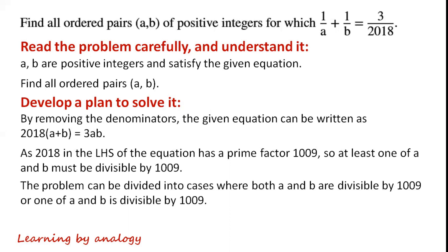The problem can be divided into cases: where both A and B are divisible by 1009, or only one of A and B is divisible by 1009. Work out A and B for each case.